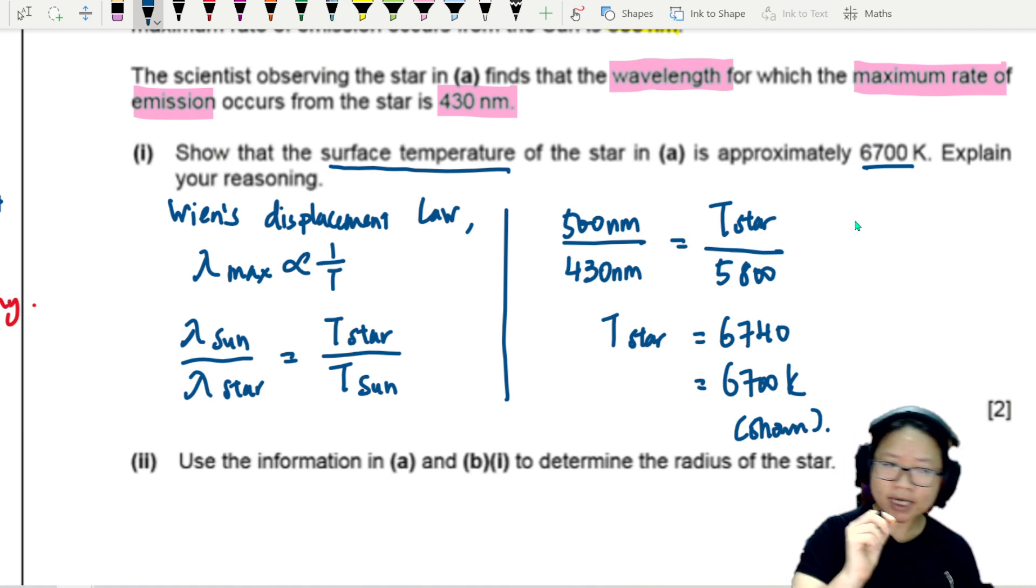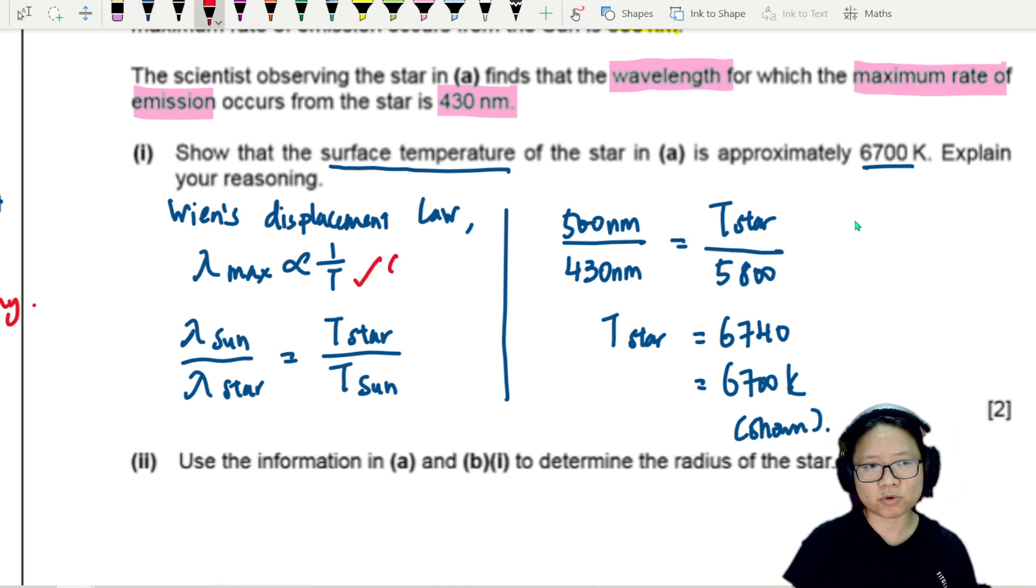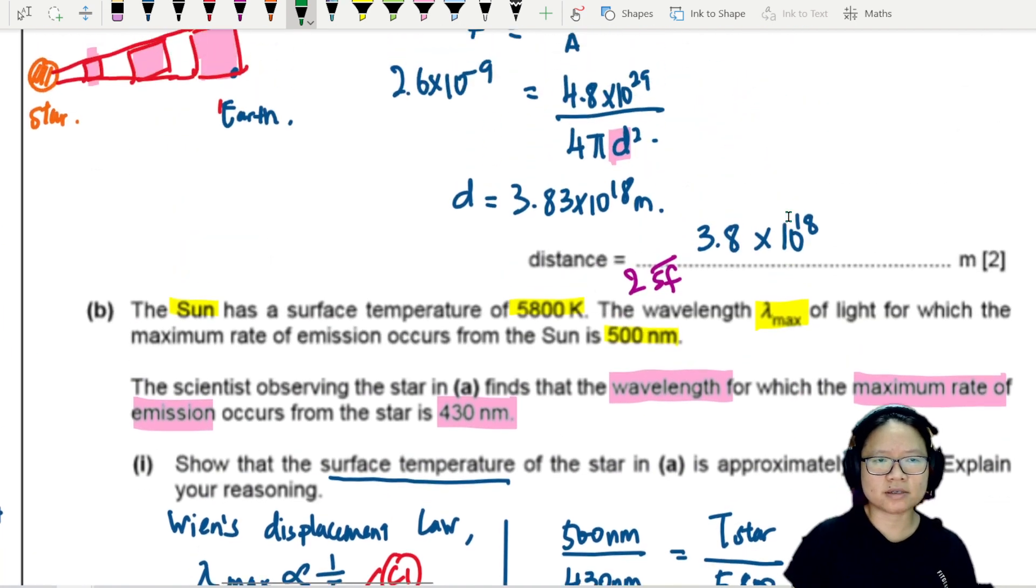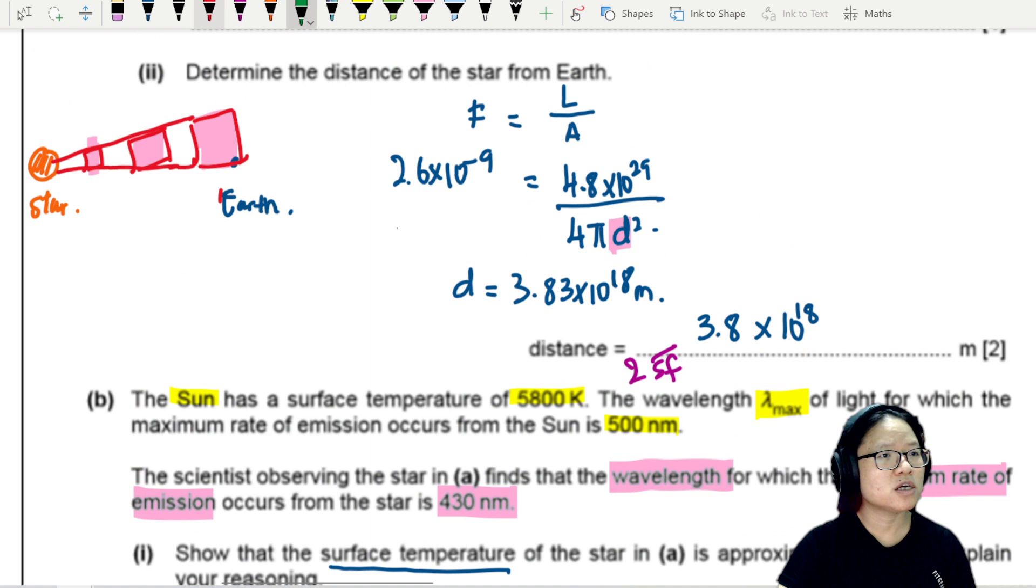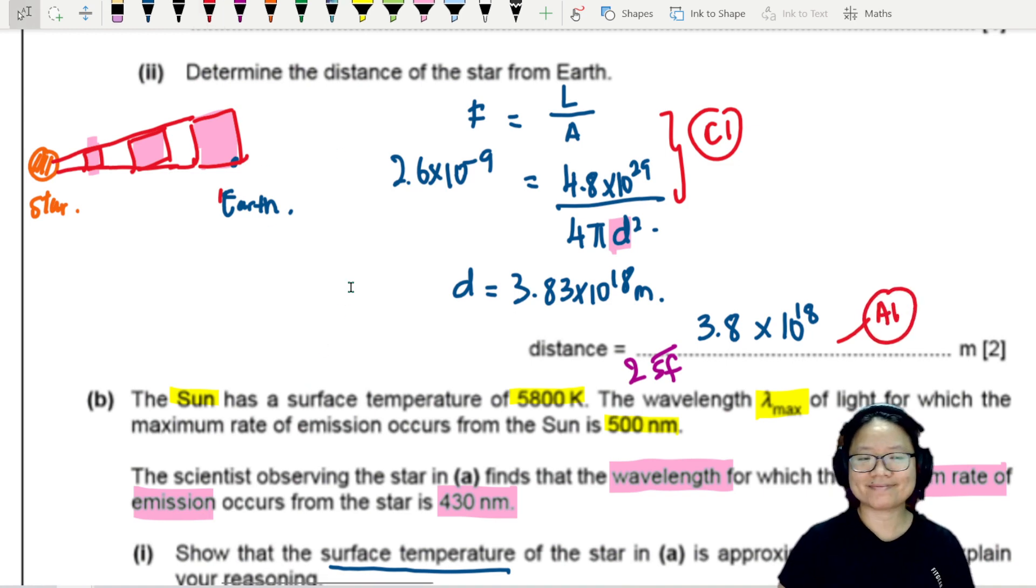The key thing we're looking for is Wien's displacement law, the statement, this will be C1. If you show the right ratio substitution, this is another C1. Since I didn't mark this with you, for part A, it's fairly straightforward. If you write the equation, it's going to be C1, and then the final answer is 1A.